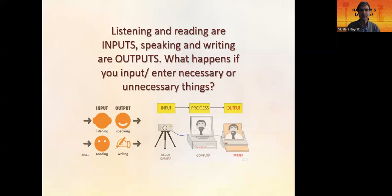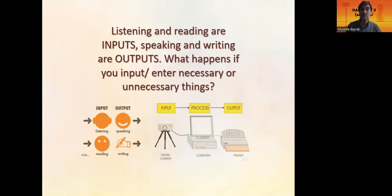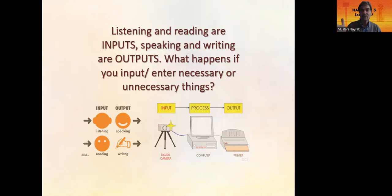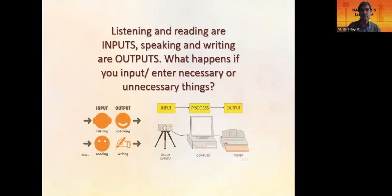As a starter, as an attention pointer, let's focus on this page. There is an image and a GIF — all about producing something: input and output. Listening is input and speaking is output. If you listen to something about a subject, then you can talk about that subject easily. Reading is input and writing is output.